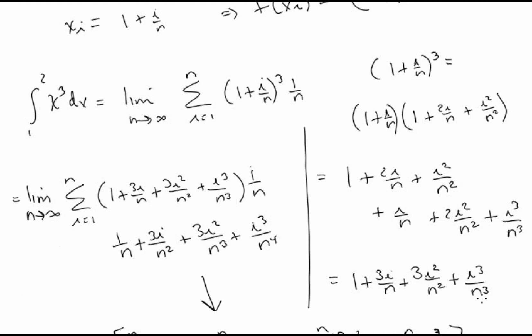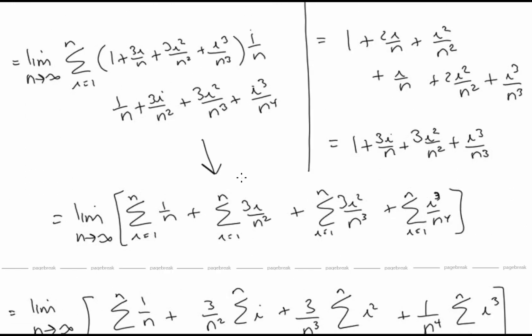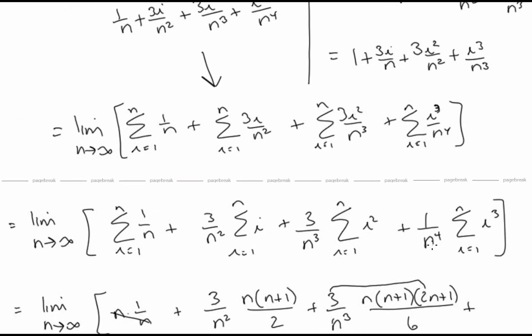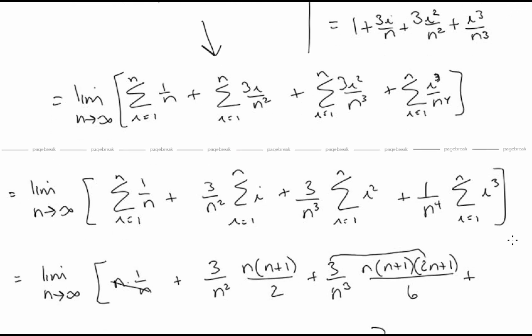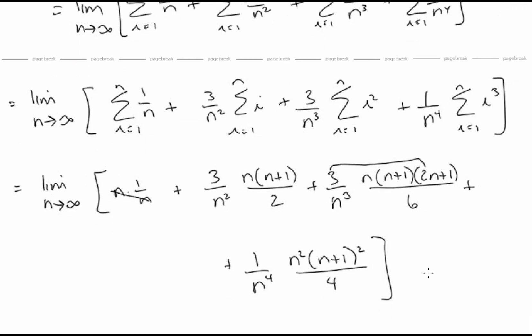So f of x i multiplied by delta x goes inside the summation with the limit on the outside. Distributing and separating into individual summations, we pull out the constant multiples not involving i, then use our summation rules to replace the sums with expressions in n, after which we can take the limit.